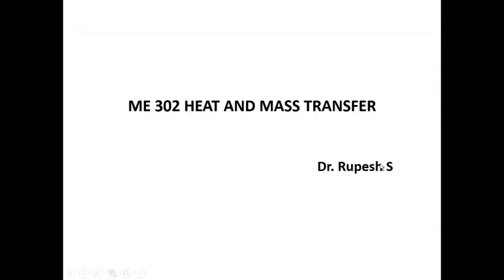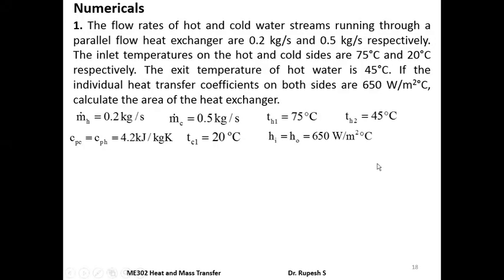The first question: the flow rates of hot and cold water streams running through a parallel flow heat exchanger are 0.2 kilograms per second and 0.5 kilograms per second respectively. The inlet temperatures on the hot and cold sides are 75°C and 20°C respectively. The exit temperature of hot water is 45°C. The individual heat transfer coefficients on both sides are 650 W/m²°C. Calculate the area of the heat exchanger.